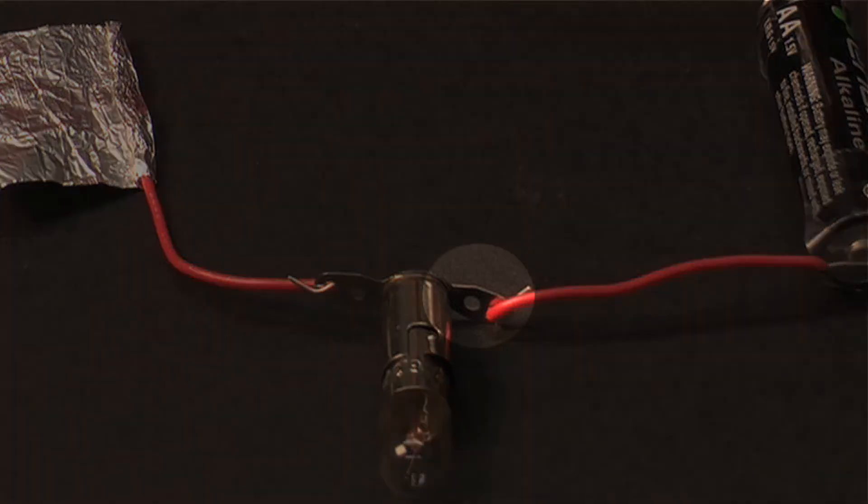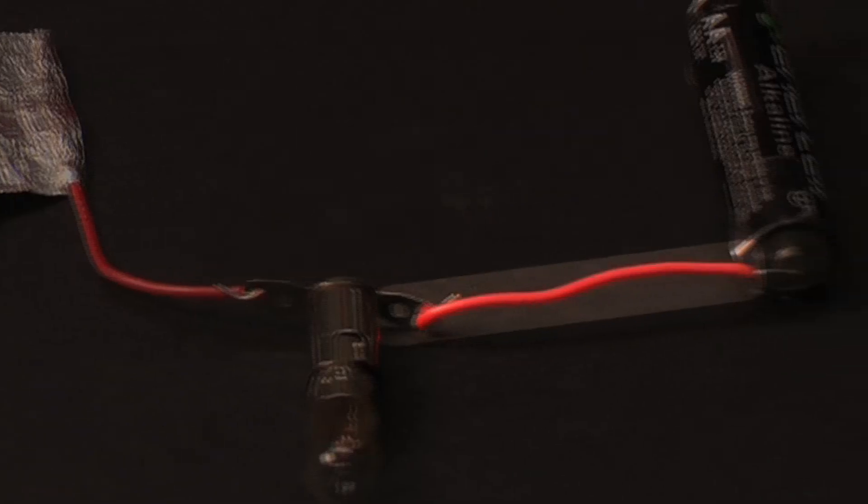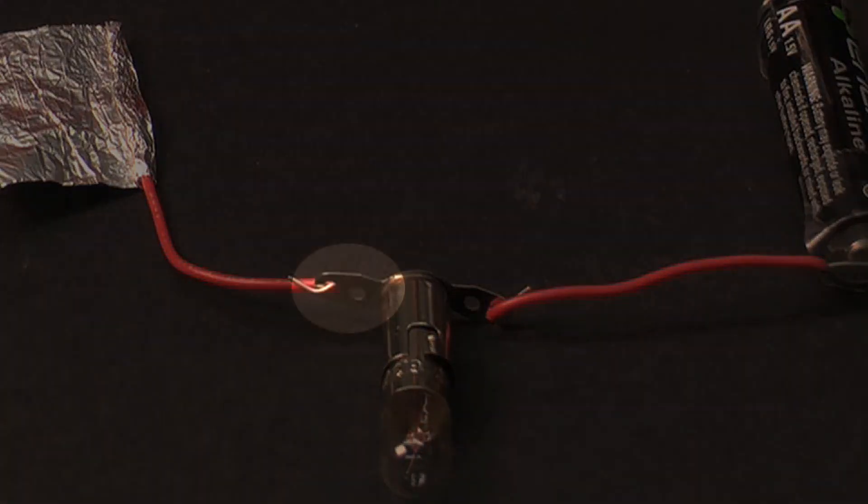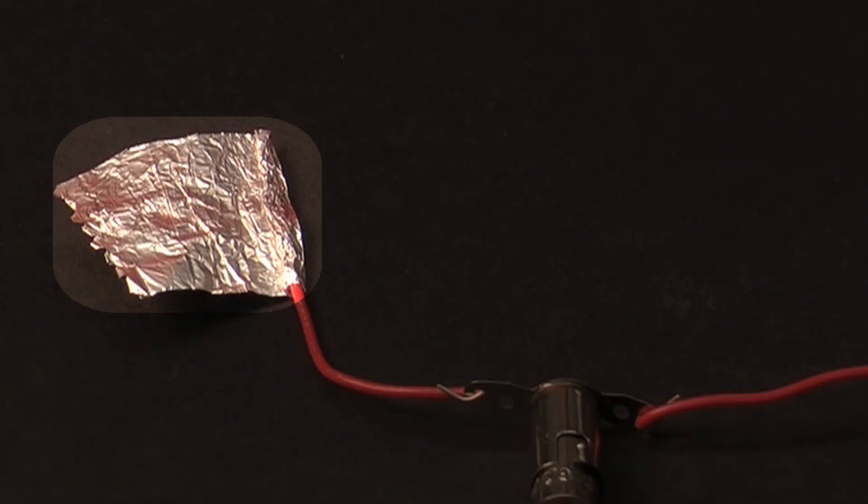The lower extension of the lamp holder should be connected to a wire that connects to one end of the battery. And the higher extension of the lamp holder should be connected to a wire that has a piece of foil wrapped around its free end.